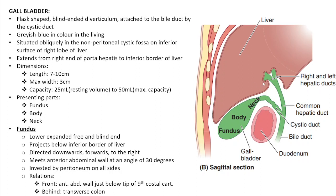The dimensions of the gallbladder: length is roughly 7 to 10 centimeters, maximum width is 3 centimeters, resting capacity is 25 ml and maximum capacity is 50 ml. Its parts are the fundus (blind end), the body (extending from fundus to the neck), and the neck — the narrow part connecting body to the cystic duct.